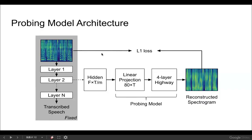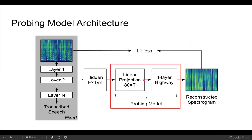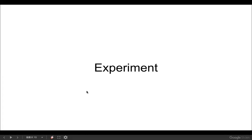Now we introduce the architecture of our probing model, shown in the red bounding box. The length of the hidden state is first up-sampled back to the original length by a linear projection, if it has been down-sampled previously in the ASR network. Then we feed it into a four-layered highway network and output the reconstructed spectrogram. In the next section, I'll go through the settings and results of our probing model experiment.